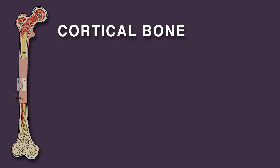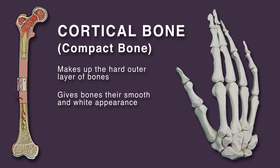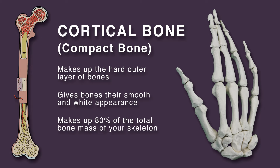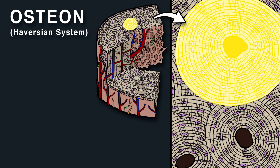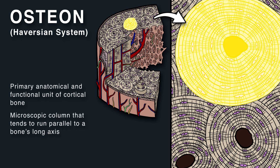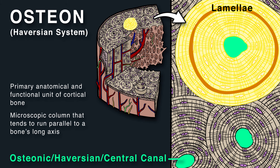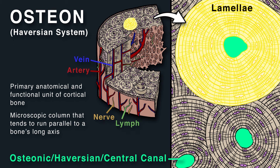Cortical bone, also called compact bone, makes up the hard outer layer of bones. It gives bones their smooth and white appearance and makes up 80% of the total bone mass of your skeleton. An osteon, also called a Haversian system, is the primary anatomical and functional unit of cortical bone. It is a microscopic column that tends to run parallel to a bone's long axis. Osteons have an osteonic or Haversian canal running through their center, surrounded by concentric rings of matrix called lamellae. Haversian canals allow nerve fibers and blood vessels to pass through and supply the bone.